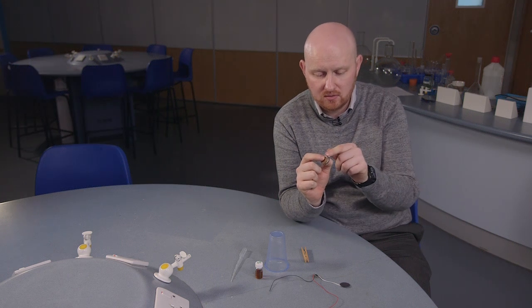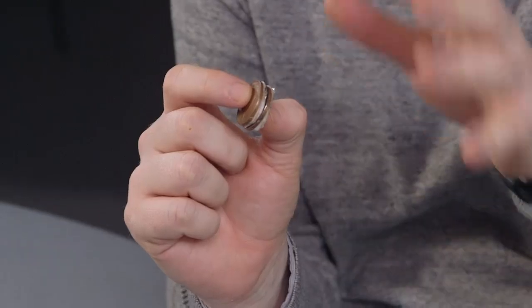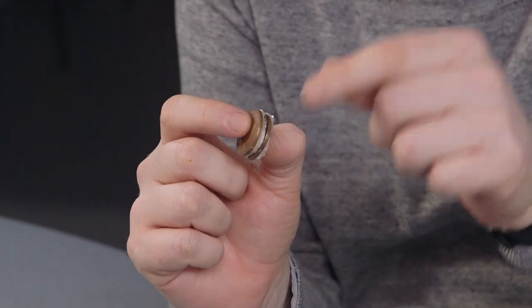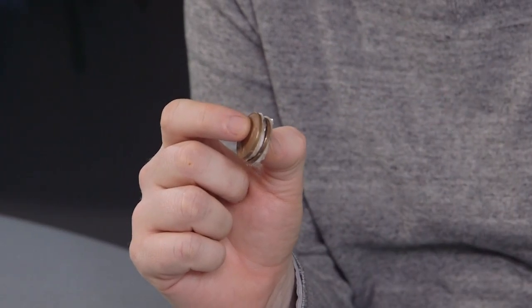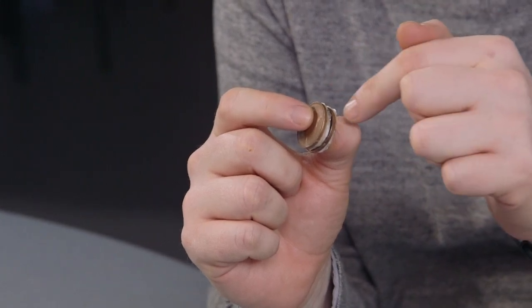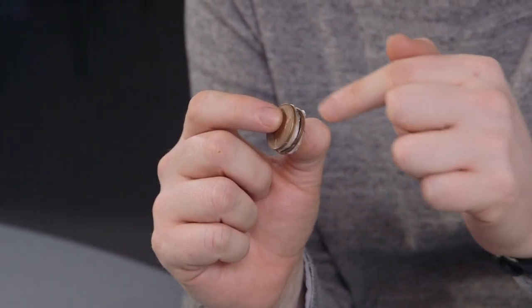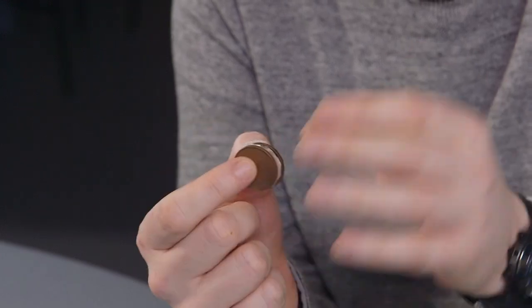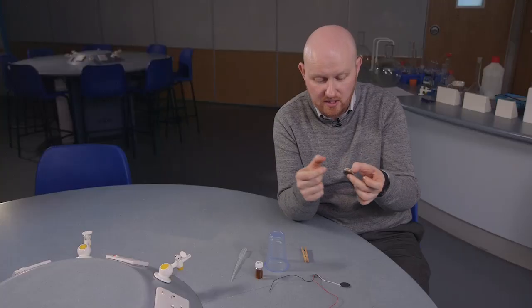We've got two different metals which are different reactivities. So aluminium more reactive than copper. We have an electrolyte and basically what happens is we have a flow of electrons between the metals through the electrolyte going around creating a current. So we'll basically have a bit of electricity being generated.